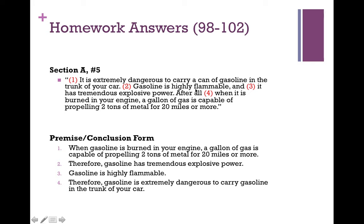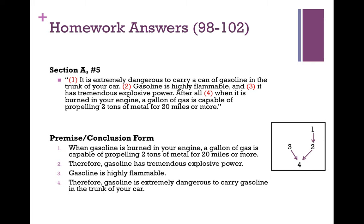Four is not being used to support that it's highly flammable. The fact that a gallon of gasoline can propel two tons of metal doesn't speak to its flammability — it does speak to its power. So in premise-conclusion form, one leads to two, and then two and three provide independent reasons to think it's dangerous to carry gasoline in your car. Even if we only knew about flammability, that would make it dangerous. Likewise, explosive power alone would also make it dangerous. So two and three provide independent reasons for thinking that four is true, and one provides evidence for thinking that two is true.